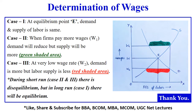Next is the determination of wages, which is explained through a graph. In Case 1, E is the equilibrium point where demand and supply of labor are equal. In Case 2, some firms prefer paying more wages, so the wage rate is W1 — here demand reduces but supply is more, shown with green shading in the graph. Then in Case 3, the wage rate is very low at W2 — here demand is more but supply is less, shown as red shading.